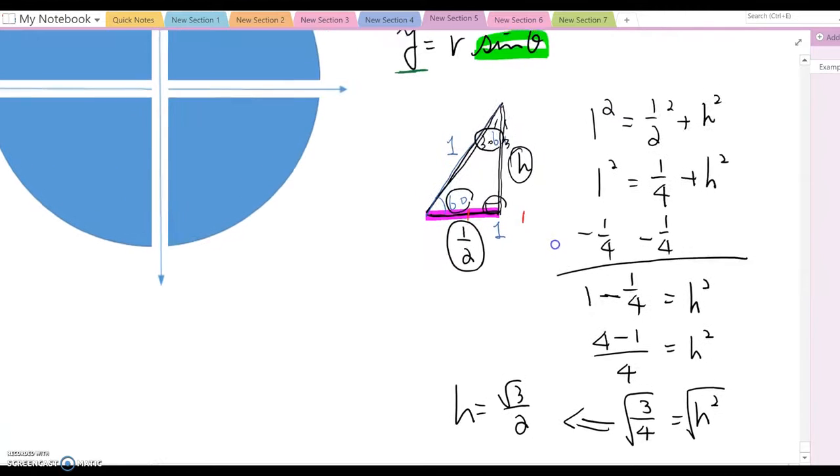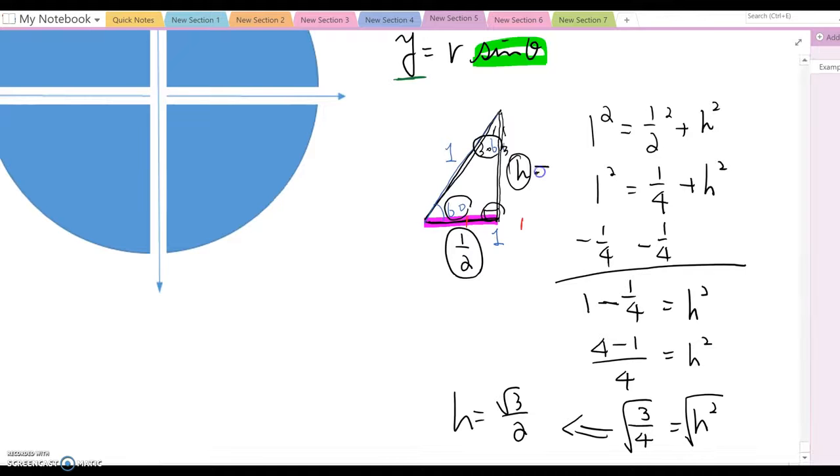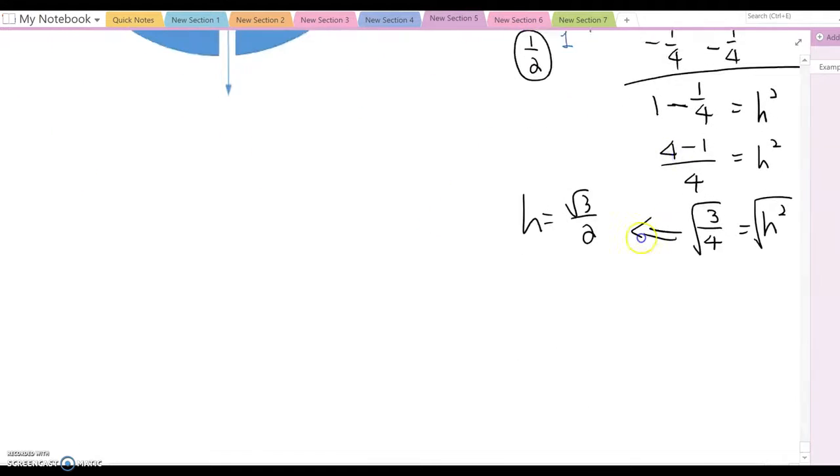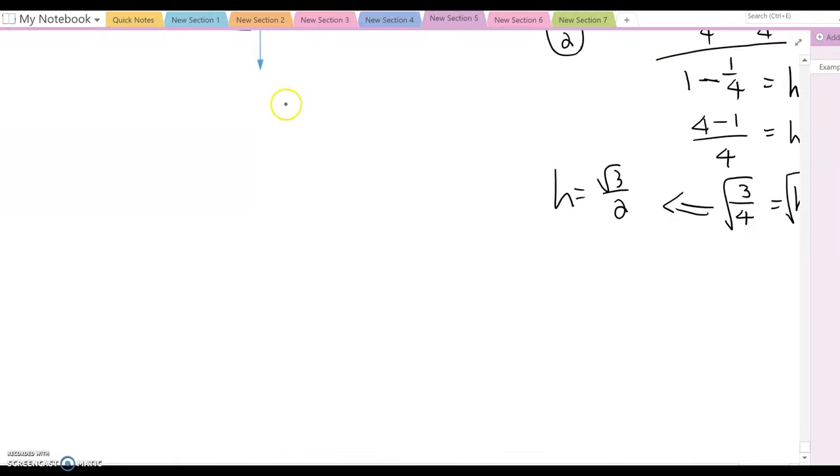Therefore, now we can define this h equals root 3 over 2. Please remember those values. They are really important values, so I am going to summarize based on that. If we have 30, 60, and 90 triangle, if hypotenuse equals 1, then opposite 30 becomes 1 over 2, opposite 60 becomes root 3 over 2.